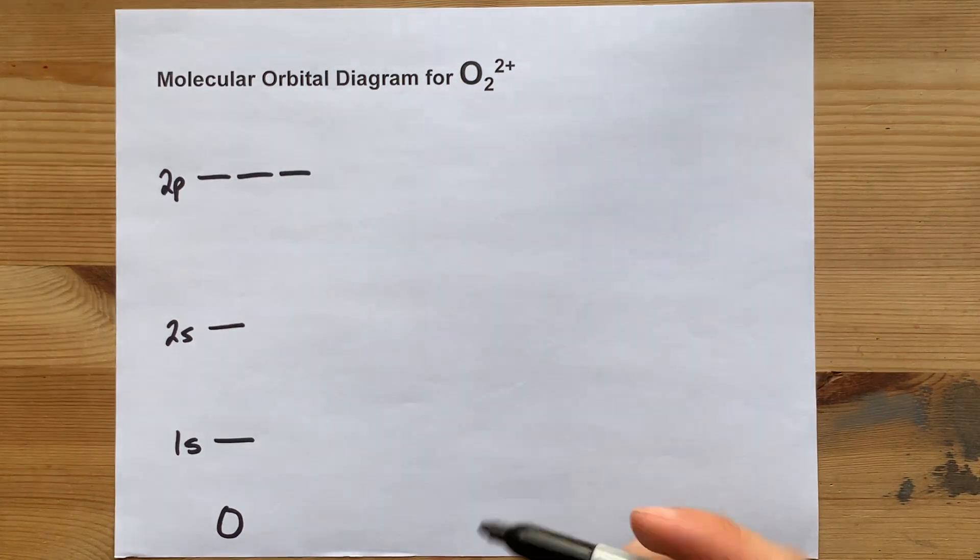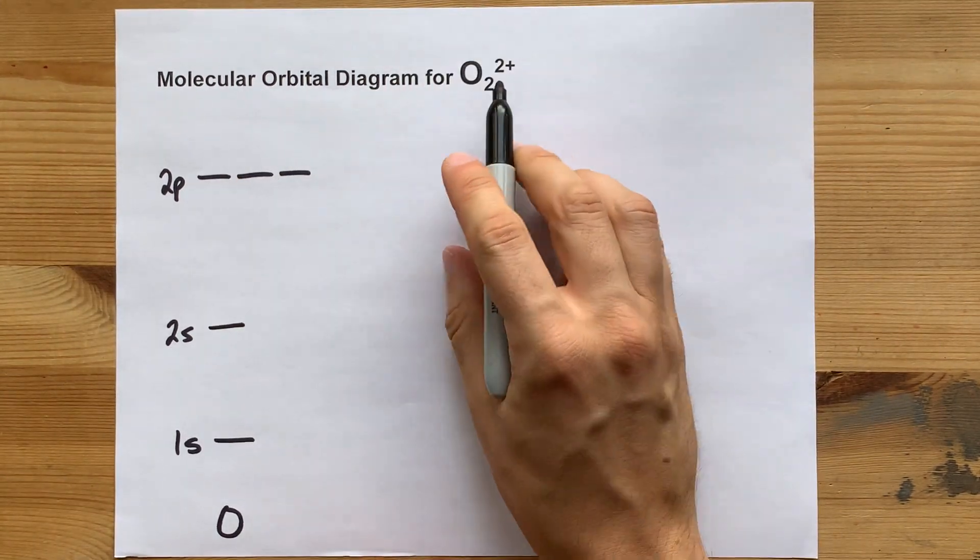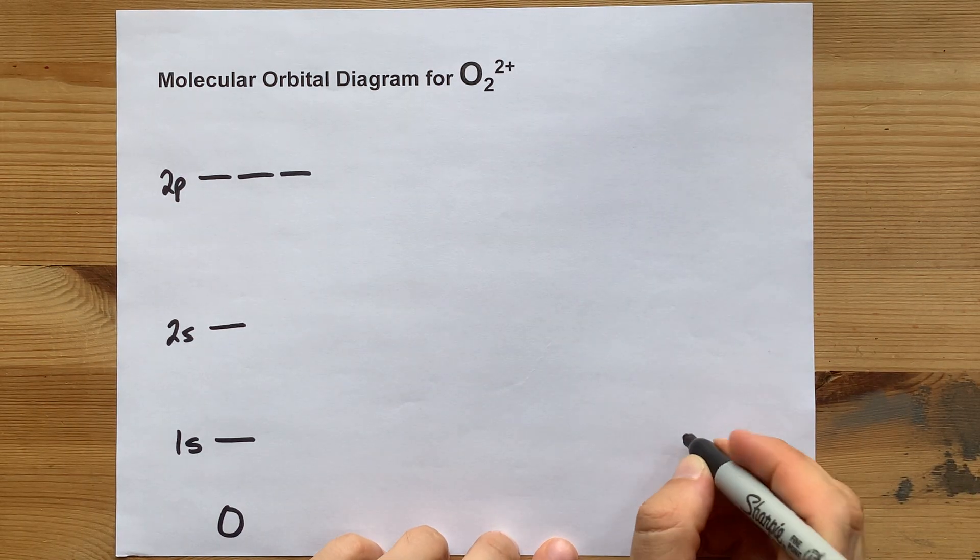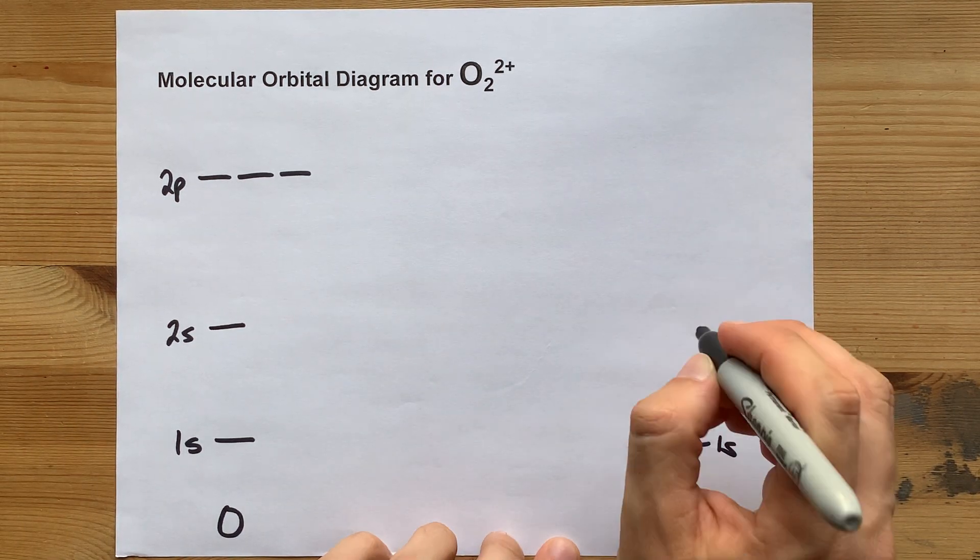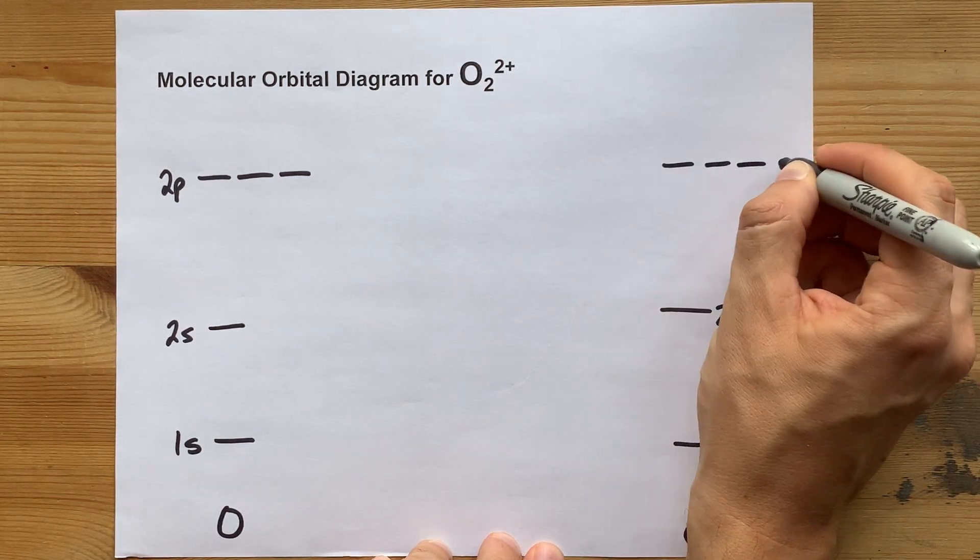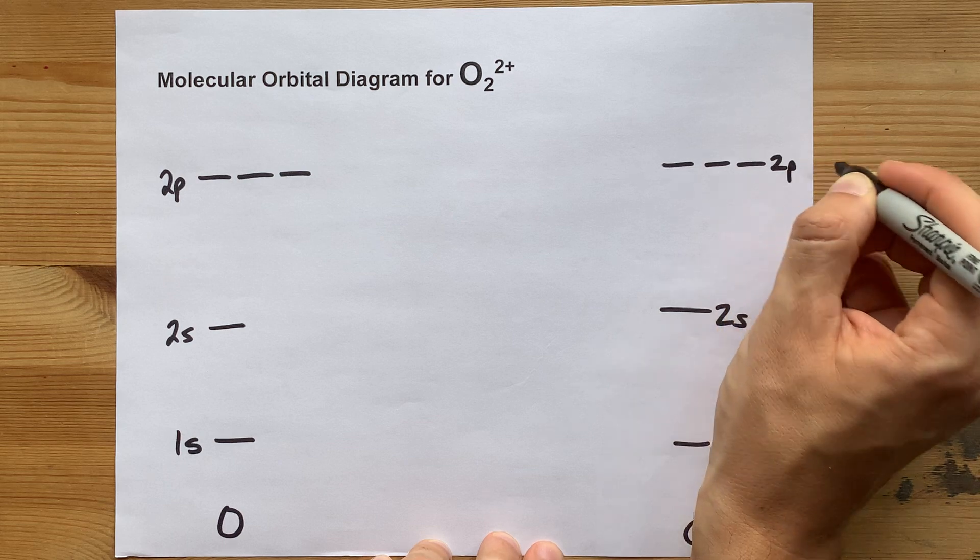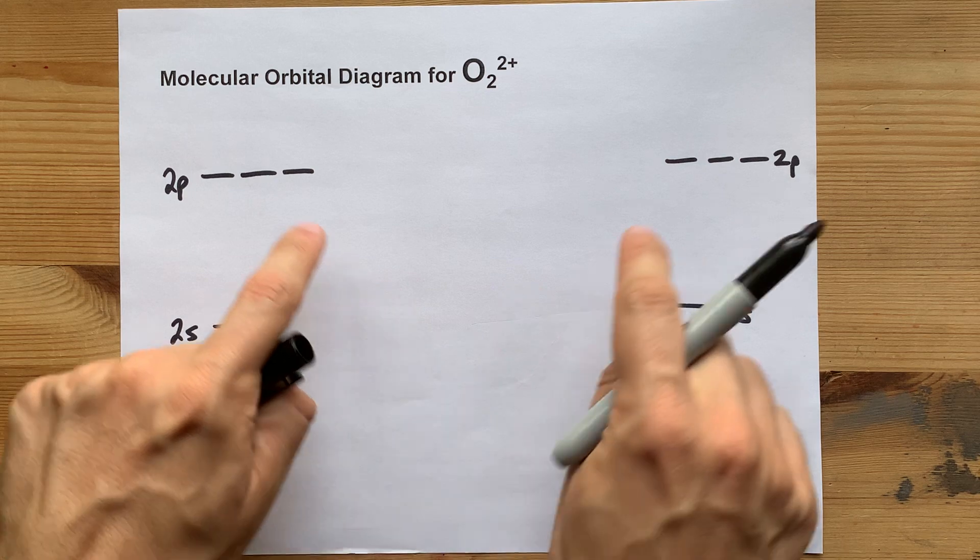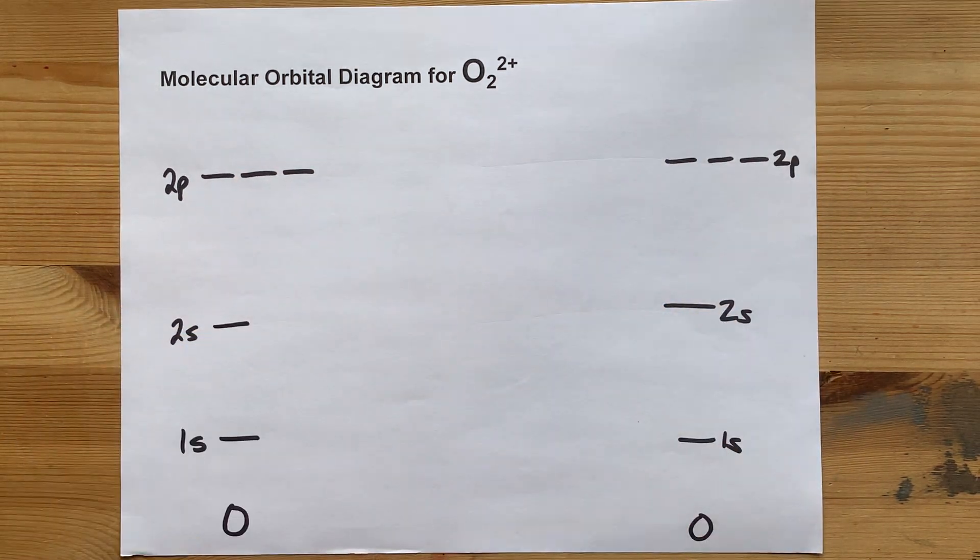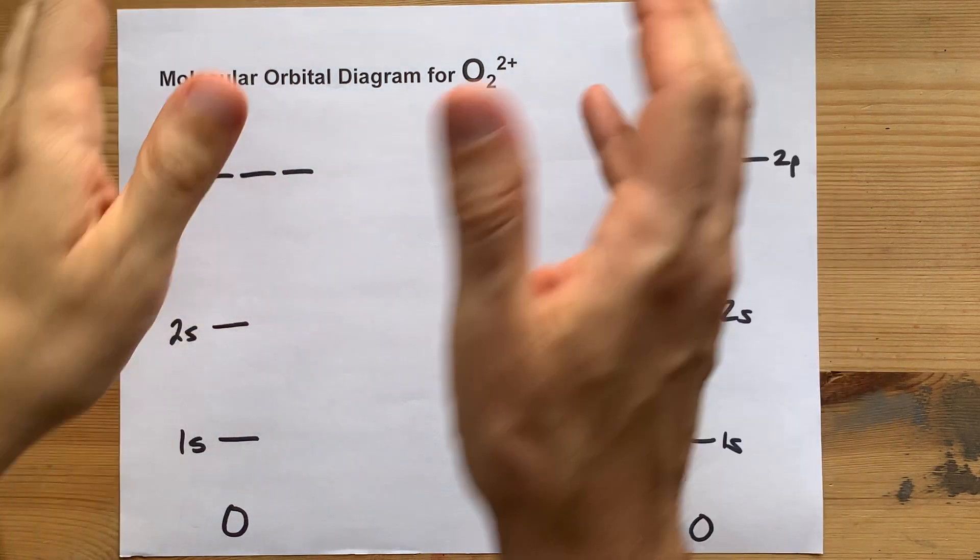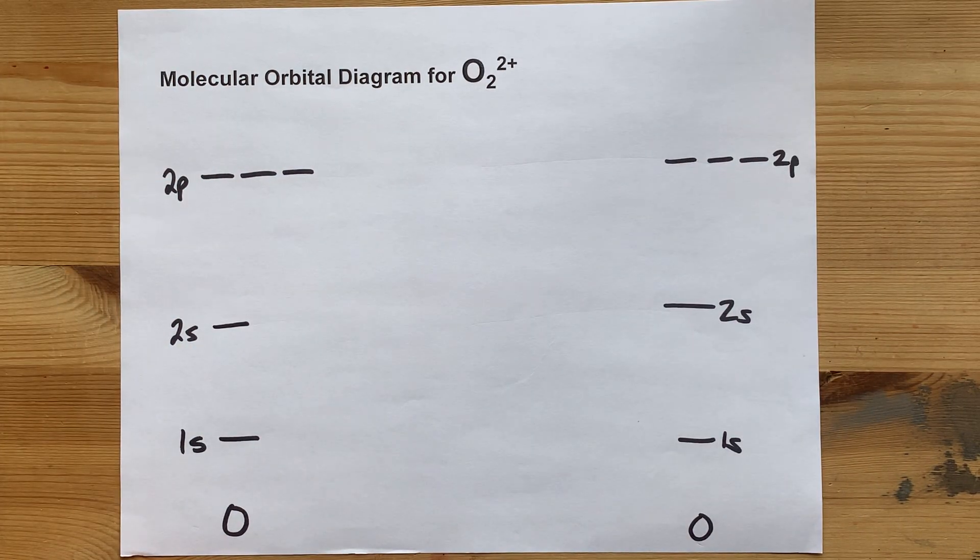Oxygen normally brings eight electrons each, but I'm not going to worry about that because I'm going to change the number of electrons later. Again, oxygen has a 1s2, 2s2, 2p4 electron configuration. I'm making sure that my 1s's are at the same level, 2s's are at the same level, 2p's are at the same level because these are the same atom. They're supposed to have the same energies on an orbital by orbital basis.